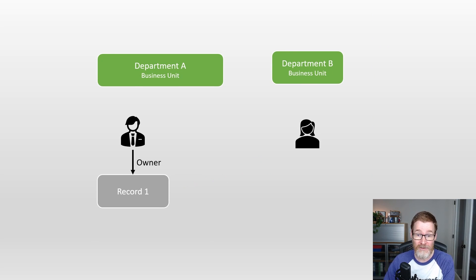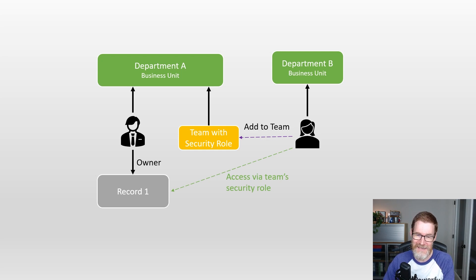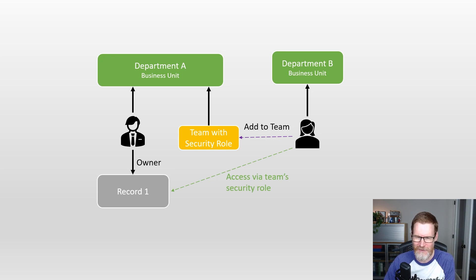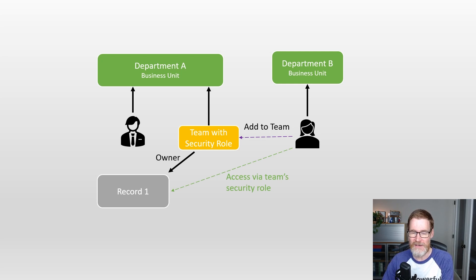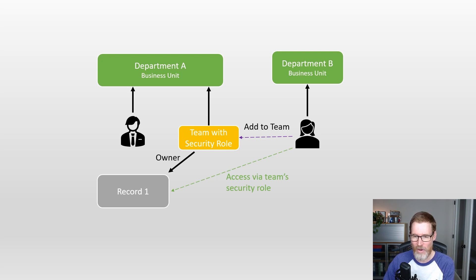Another option is to have a team that is in Department A's business unit, give that team a security role, and then add the user from Department B to that team. They're getting access to Department A's records by proxy because they're a member of a team owned by Department A, and the security role gives them access to those records. That works quite well and is a common solution. You can even have records owned by those teams, which means you can filter to show all records owned by teams that you're in. Security in databases can get really quite complicated.